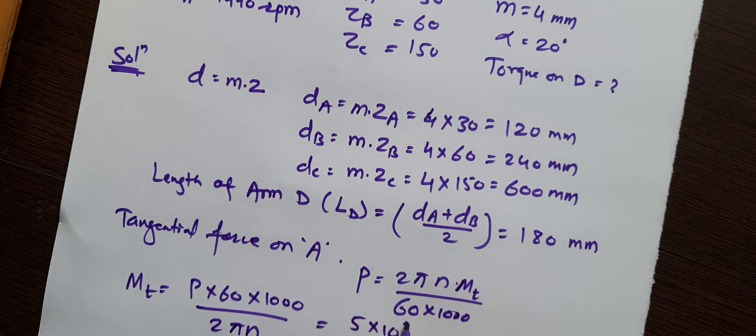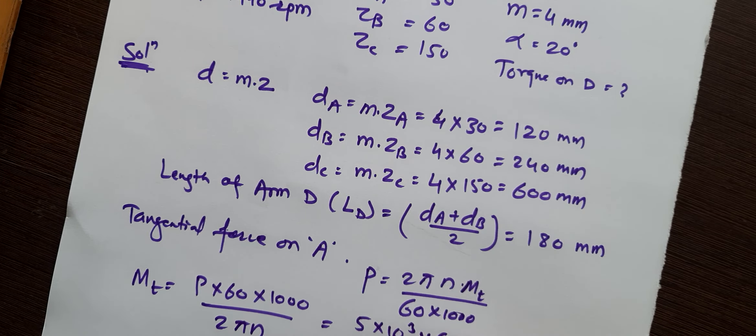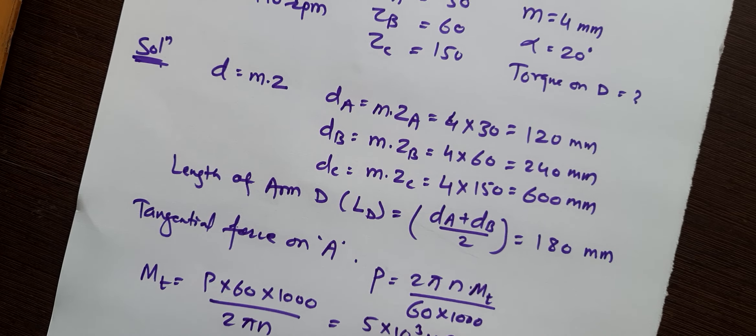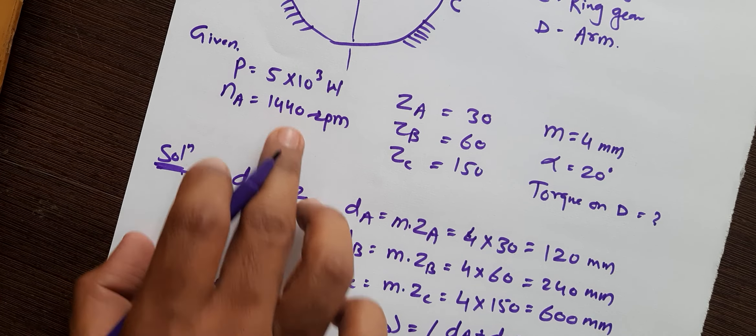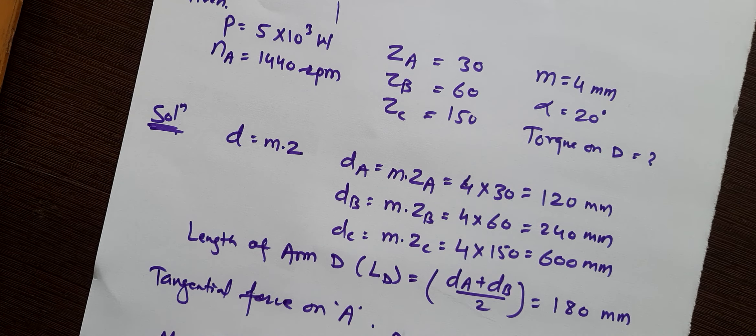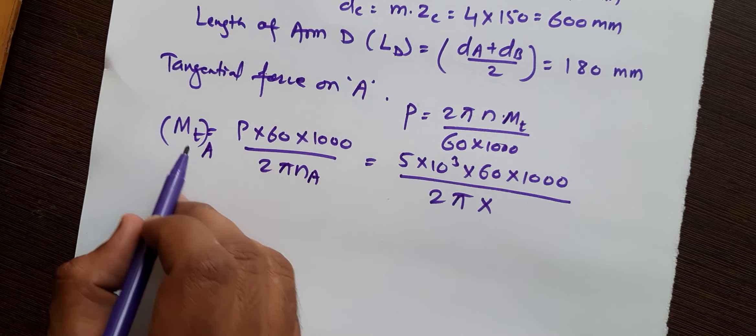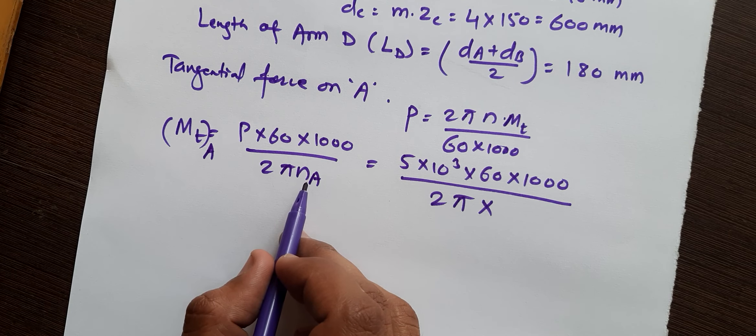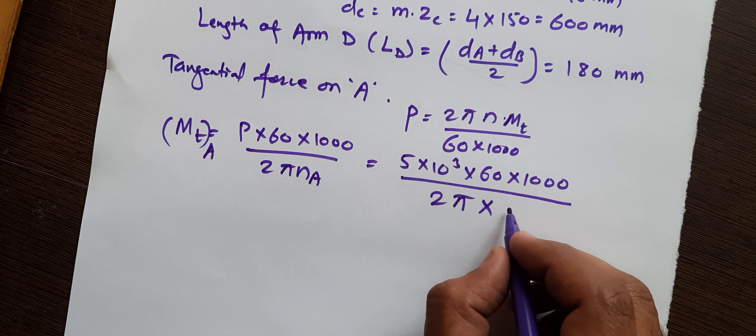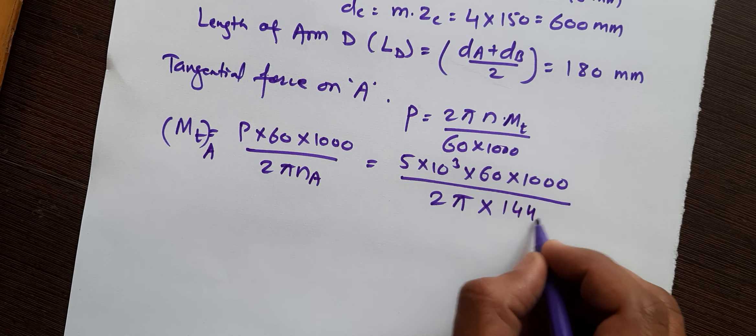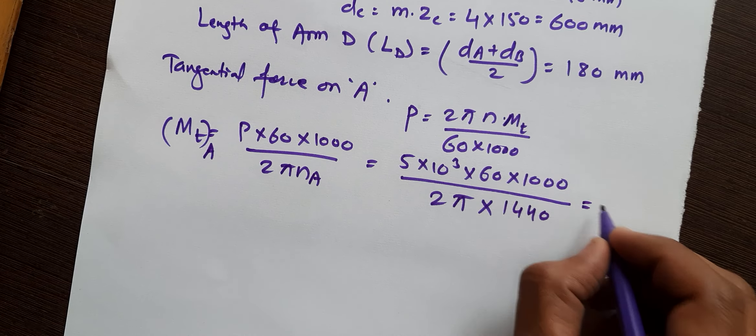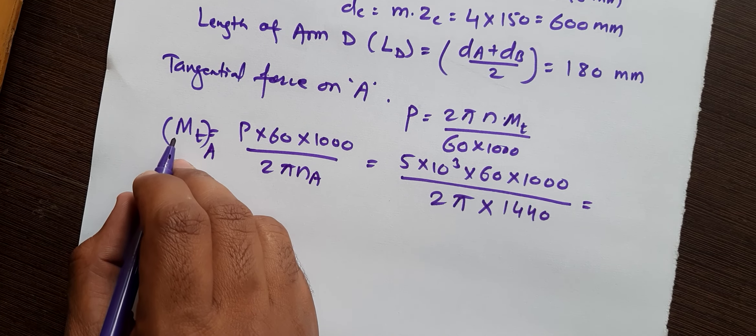So we are calculating MTA, so we need to put here nA. So MTA, here we are putting nA, so nA is 1440. Okay, so after calculation you will get MTA as 33157.28 newton-mm. So this is your torque acting on gear A.